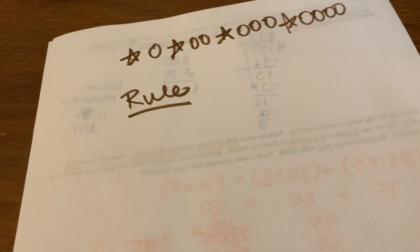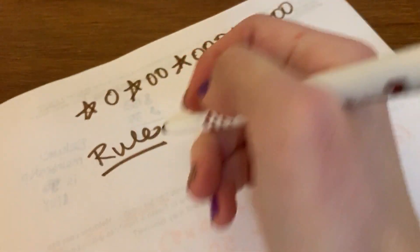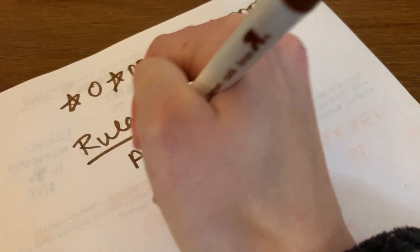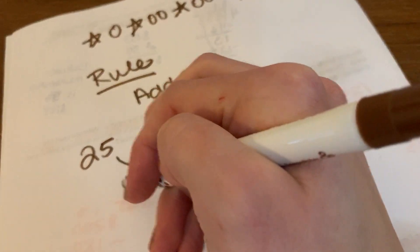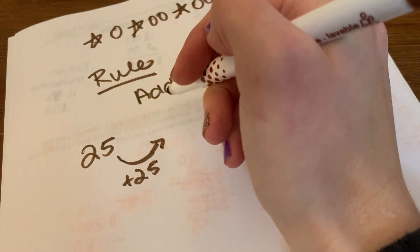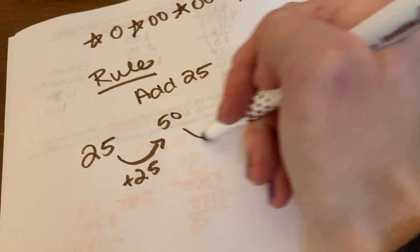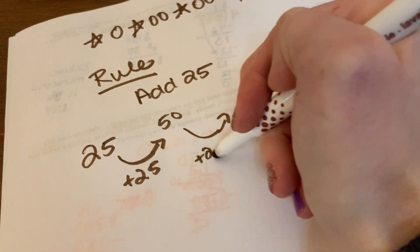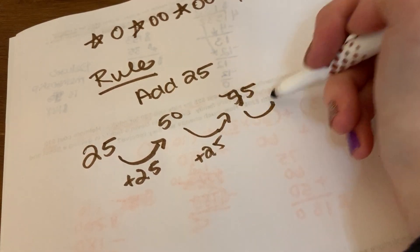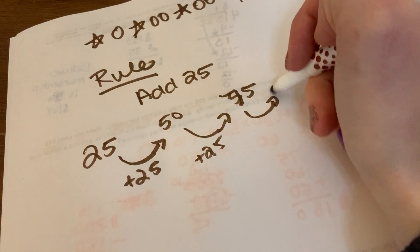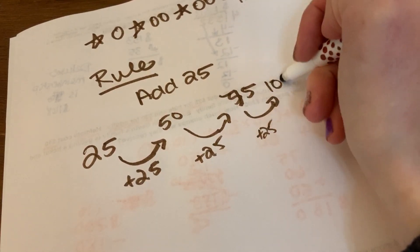So for example, here is the rule for this first one. Rule, add 25, and then they'll give you a starting point, 25. Well, add 25, you get 50. Add 25, you get 75. Add 25, you get 100.